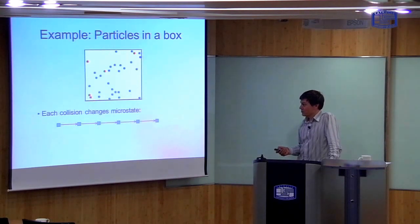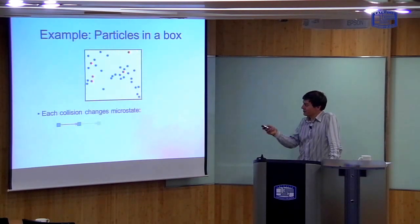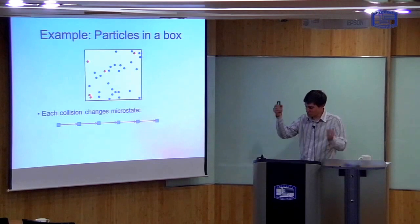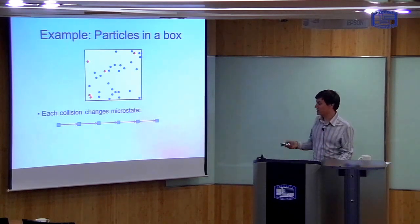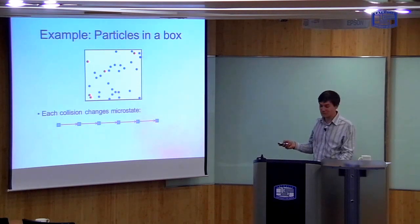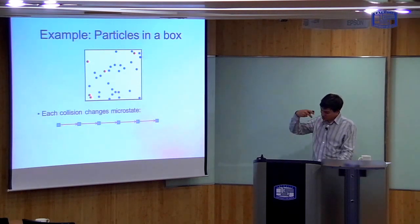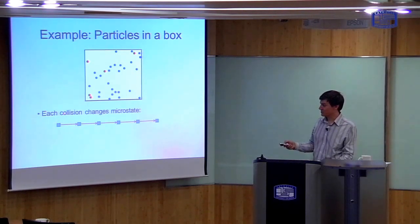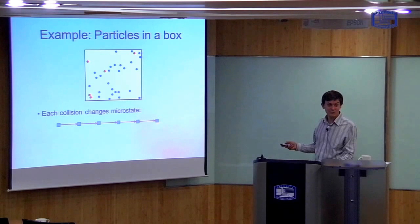I draw this symbolically like this: the system starts off in some microstate with these velocities, and it ends up in some other microstate with some new velocities with a prime. So the state of the system is changed by collisions. As I go through the whole thing, each time there's a collision the microstate is changed, and therefore the microstate the system is in is changed.